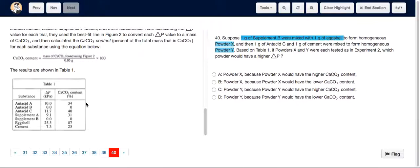So supplement B has a calcium carbonate content of 0%, but eggshell has a calcium carbonate content of 87%, so the total is 87% for powder X. For powder Y, it's made of 1 gram of antacid C and 1 gram of cement.